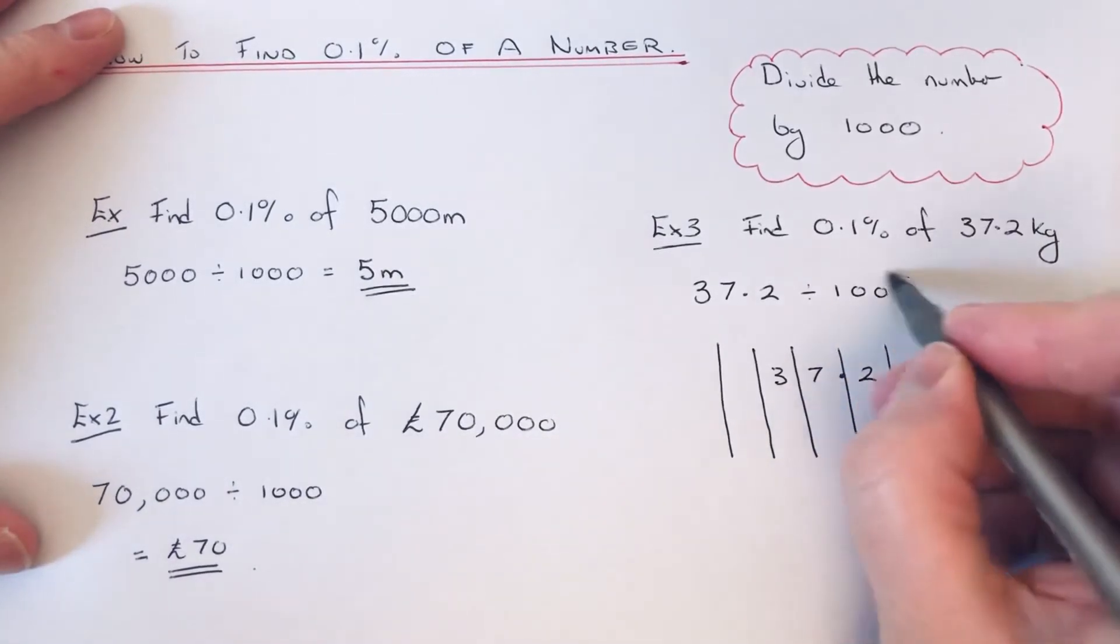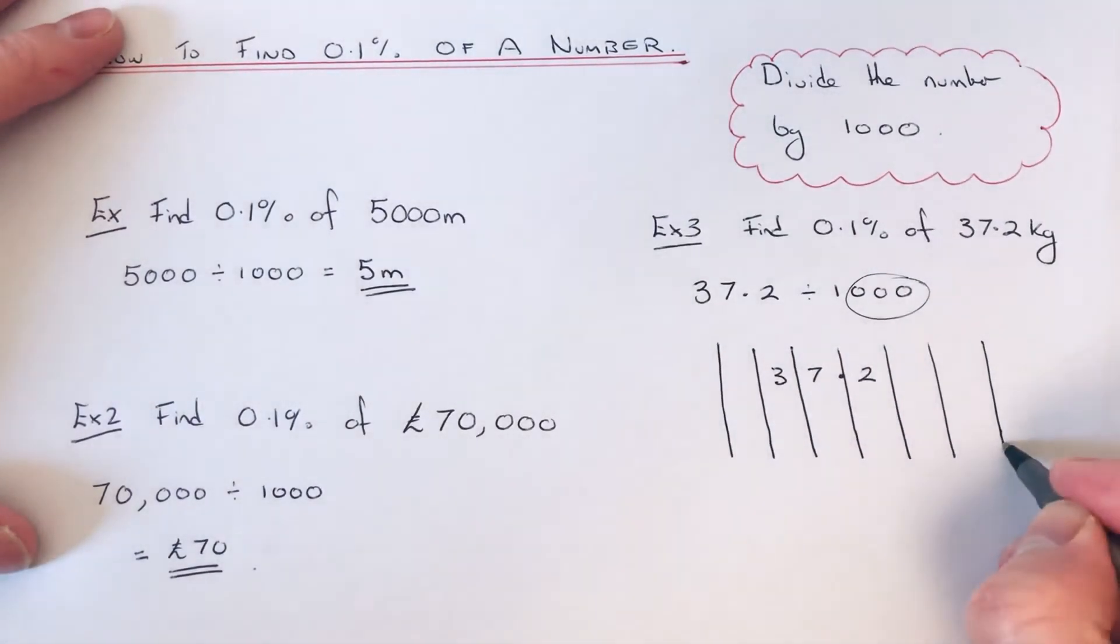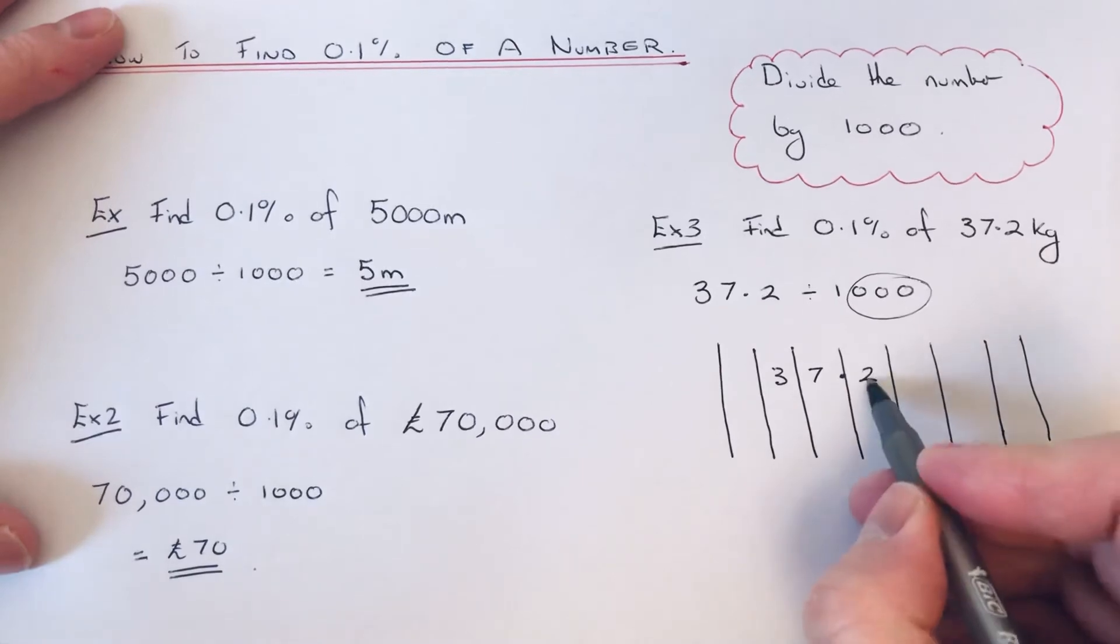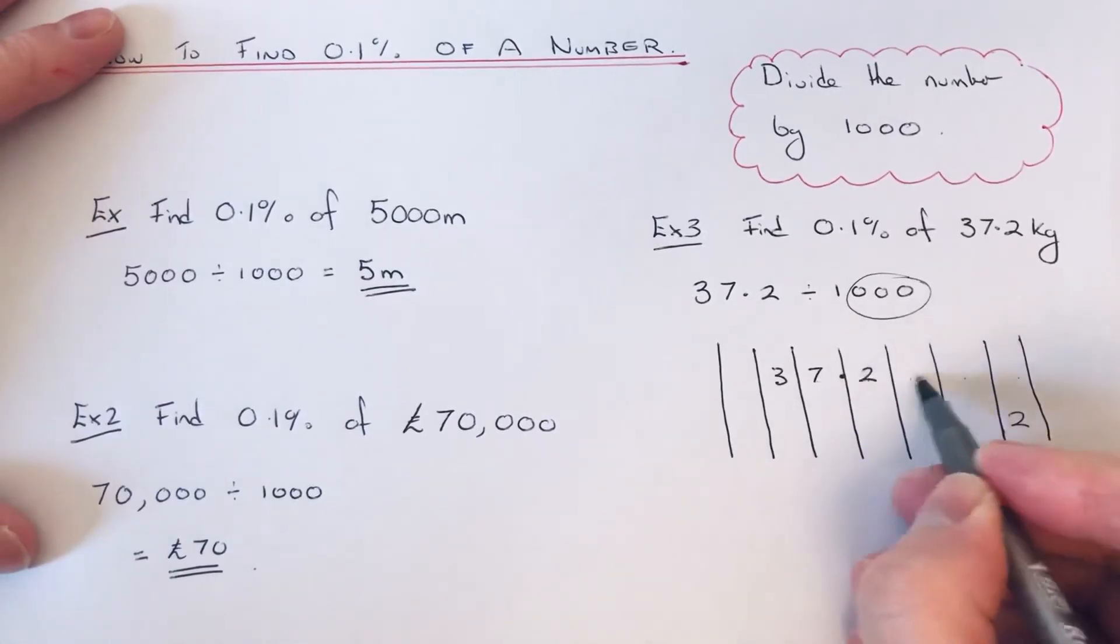If we divide by 1,000 we've got to move our numbers three places to the right. The two goes 1, 2, 3. Seven goes 1, 2, 3.